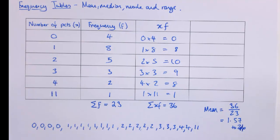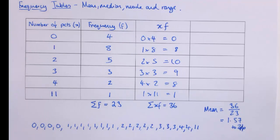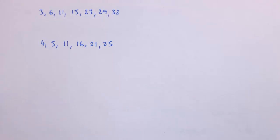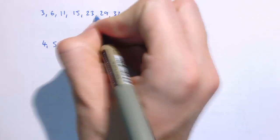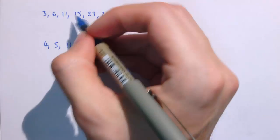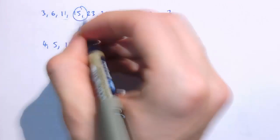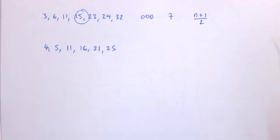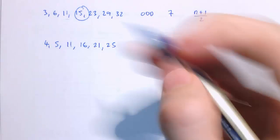Usually if someone says 'the average' they mean the mean. But we've also got the median and the mode. The median is the middle value. For a list like this, we split the data into two halves and see where the middle is. There are two slightly different cases: with an odd number of values, like 7 pieces of data, the middle value is uniquely defined. Using the formula n plus 1 over 2, that gives 7 plus 1 over 2, which is 4 — so the fourth value is the median.